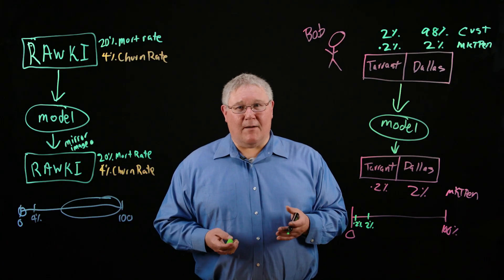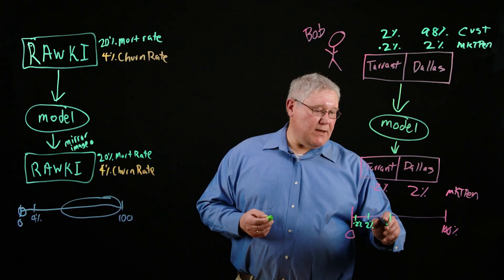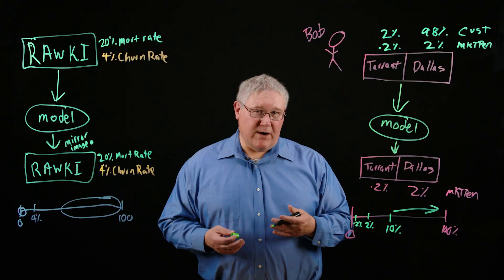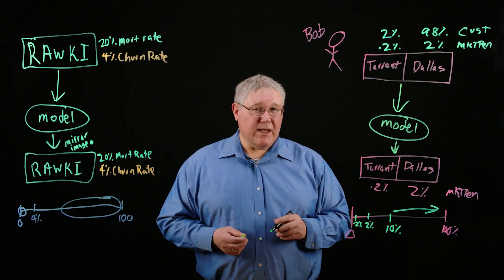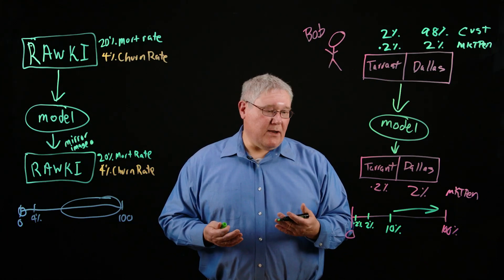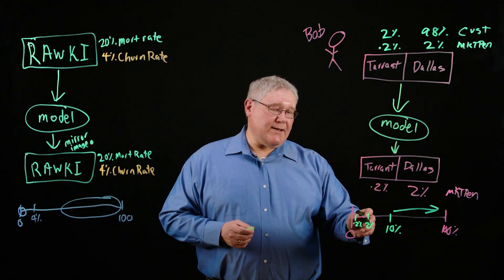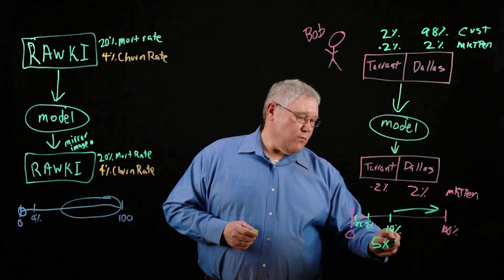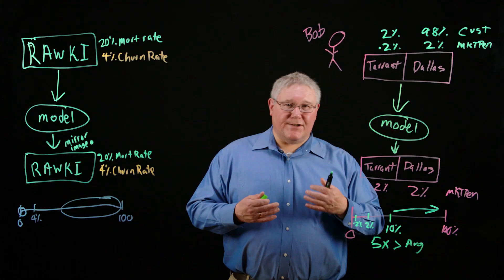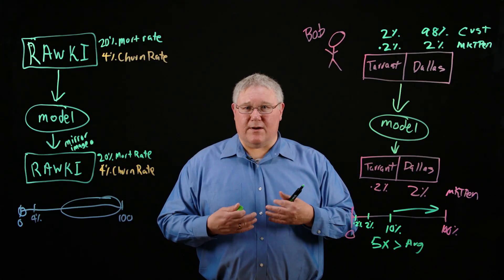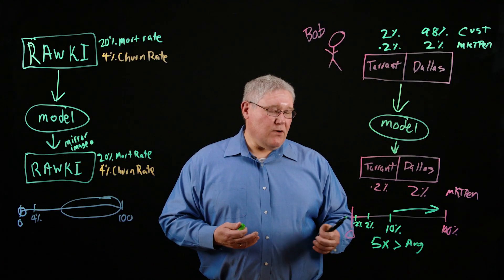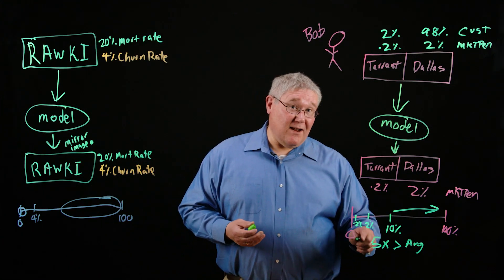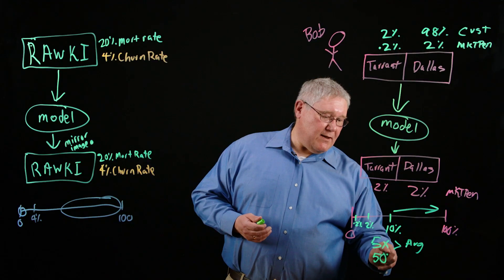Let's say that Bob, in order to maximize his ROI, wants to set a cutoff of 10%. Anybody with a likelihood to become a customer greater than 10% is someone he wants to reach out to and solicit. For people in Dallas County, in order to cross this 10% threshold, they have to be five times greater than average — because the average acquisition rate is 2%, and 10 divided by 2 is 5. Whereas for people in Tarrant County, it's not 5x, it's 50x. They have to be 50 times greater than average.